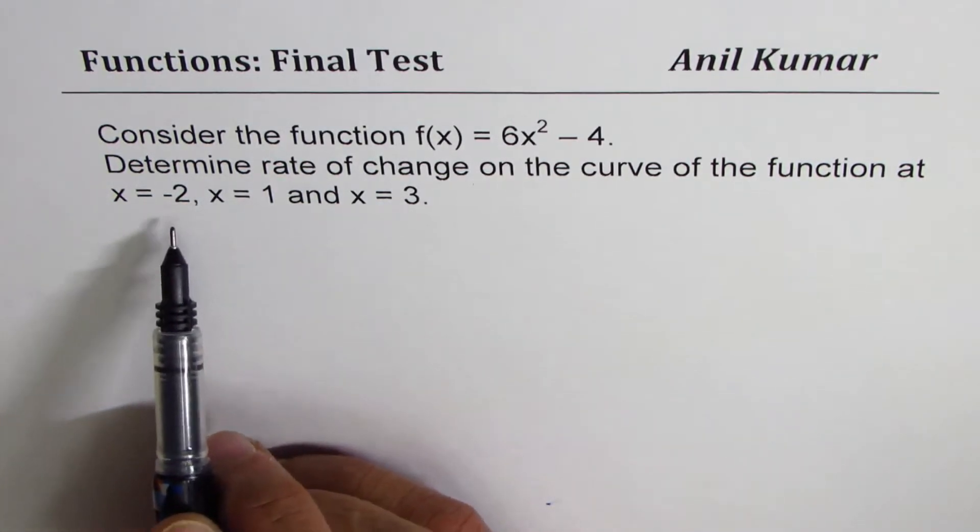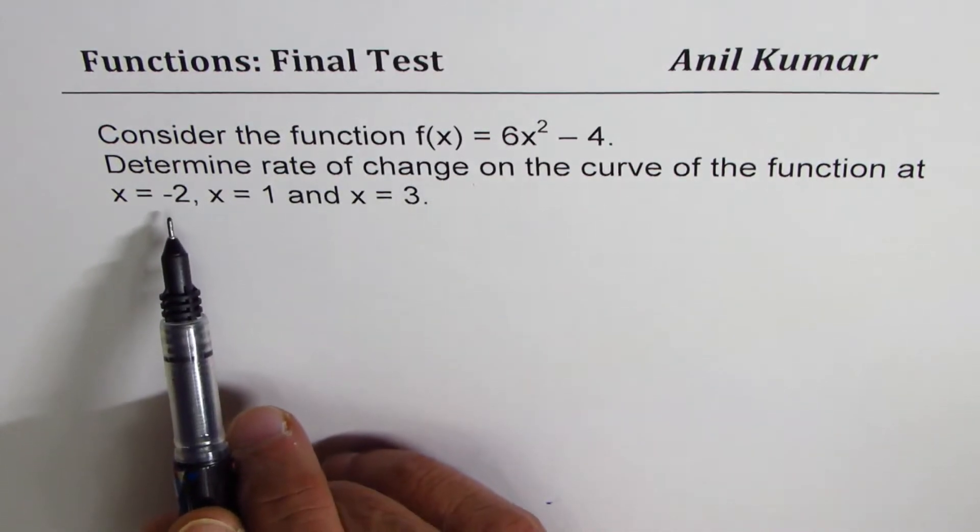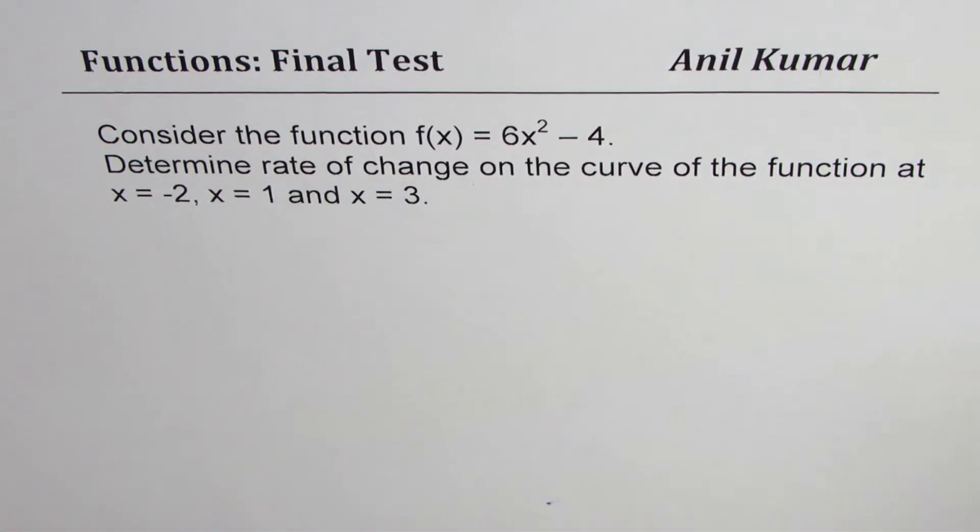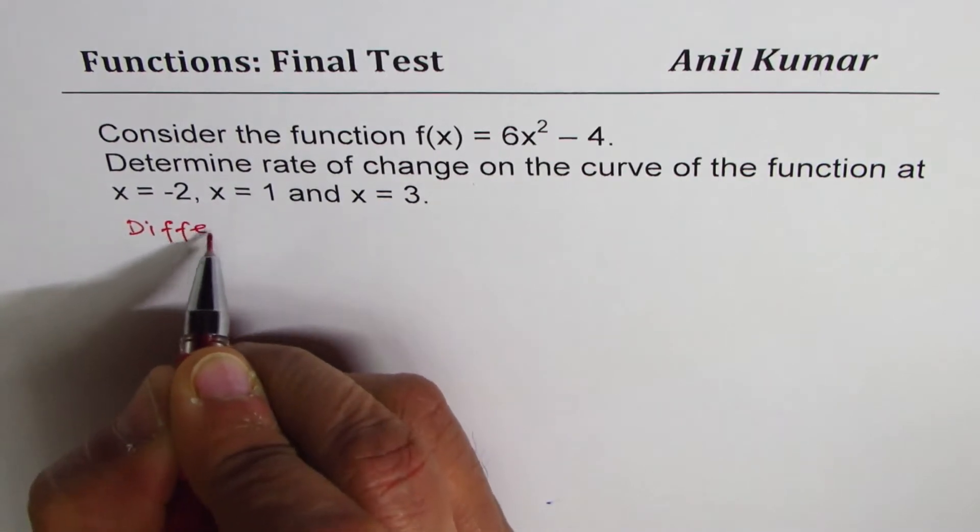Now, in cases where we are interested in finding a rate of change at three places like here, it is better to use difference quotient method. So we'll actually solve this using difference quotient method.